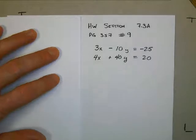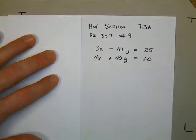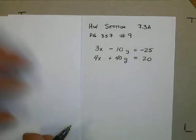This is homework section 7.3a, page 357, number 9. 3x minus 10y equals negative 25, 4x plus 40y equals 20.